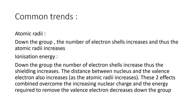Ionization energy: down the group the number of electron shells increases, thus the shielding effect increases. The distance between the nucleus and the valence electrons also increases because of the atomic radii increasing. You may not have to mention this in your exam, but that's the reasoning.